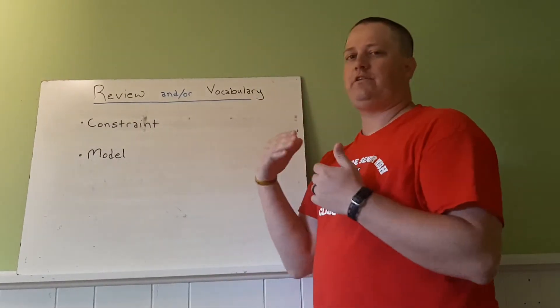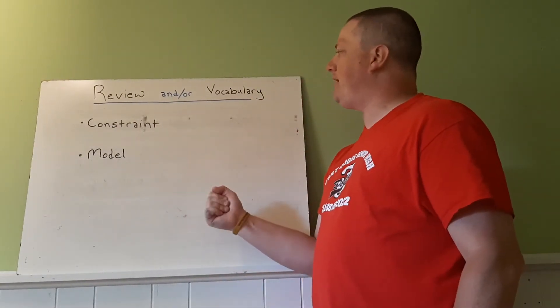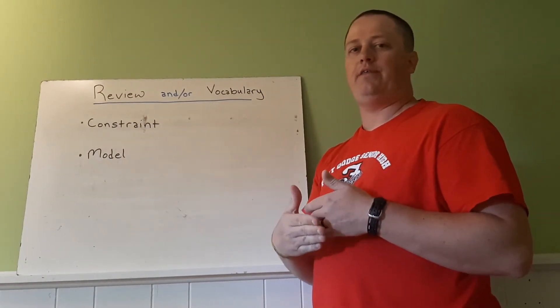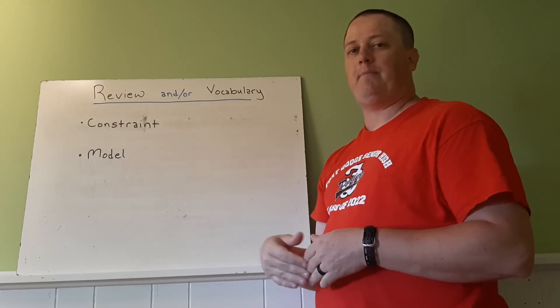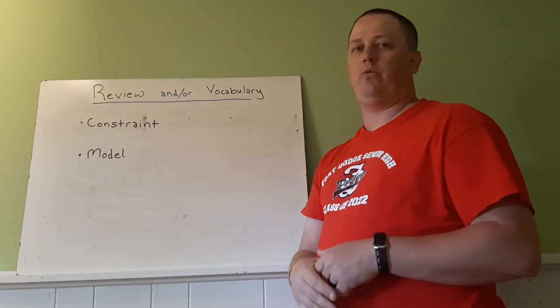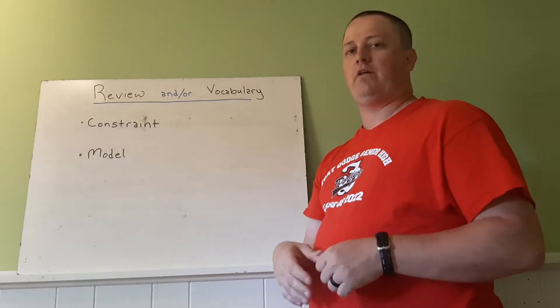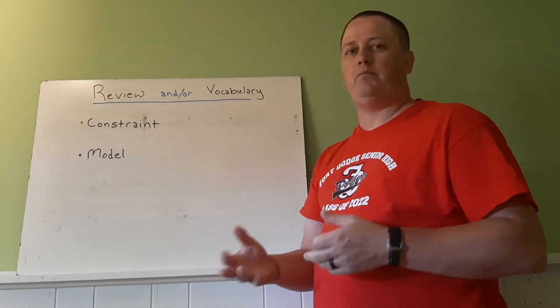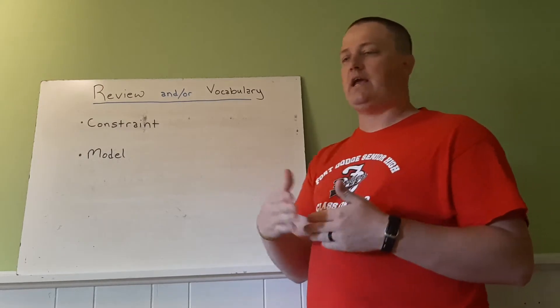We still have our same two main vocabulary words. We have constraint, which remember is just a limit on the types of numbers we're using, whether that be all positive, whether it be all negative, whether it be a mix of the two, whether you can use decimals, fractions, or not. So it can change.